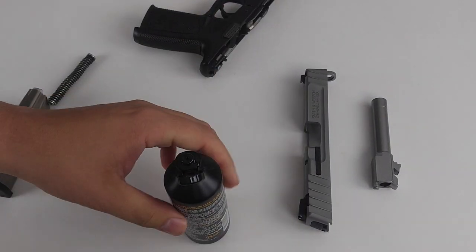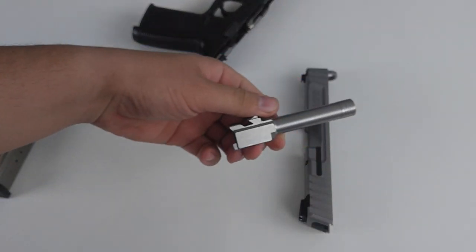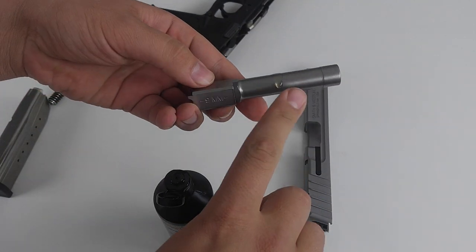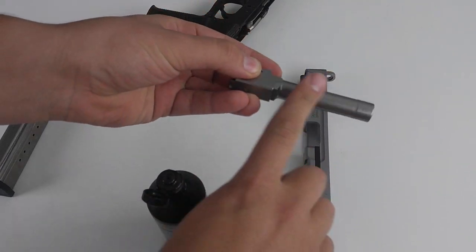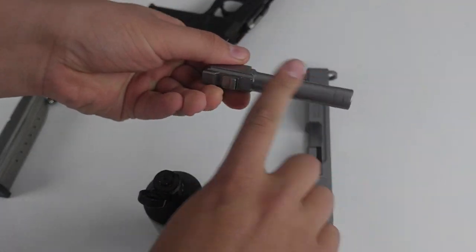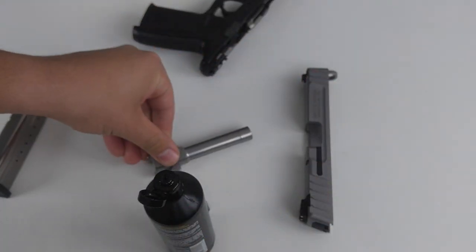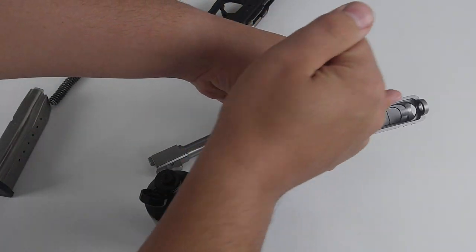All right. Now what I like to do is take the barrel and just put one drop on the outside. Take your finger and just wipe it around the outside like that, because that is going to be sliding in and out.